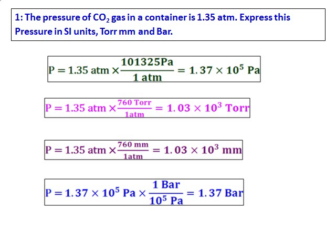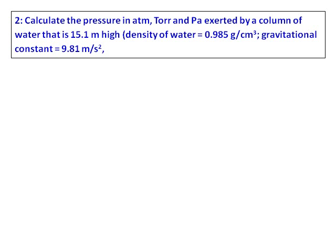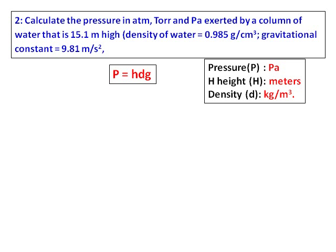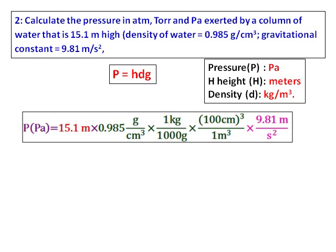Second question: calculate the pressure in atmosphere, Torr, and Pascal exerted by a column of water 15.1 meters high, with density and gravitational constant given. The formula we use is P equals hρg. The unit of pressure must be Pascal, height in meters, density in kilograms per meter cubed, and gravitational constant in meters per second squared.